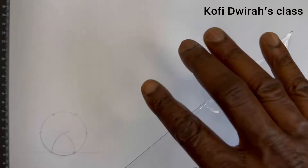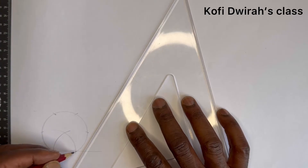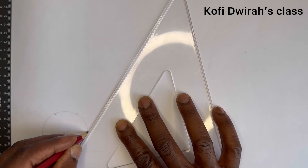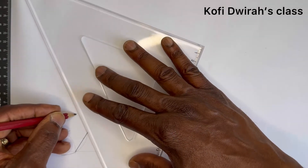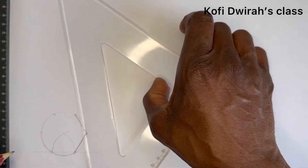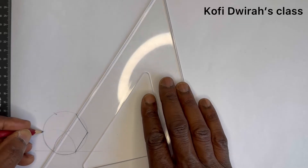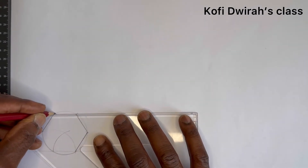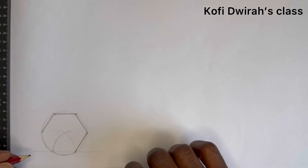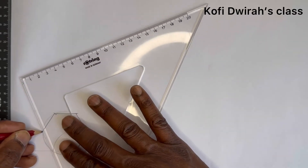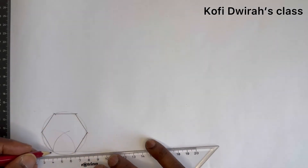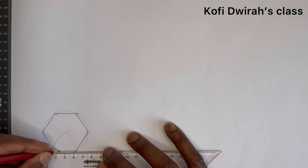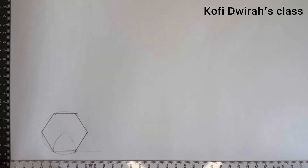Then you draw the sides of the hexagon — from here you draw a line to here, then from here you draw another line. The last one — you draw this line. So we have the hexagon completed, and this is our plan.